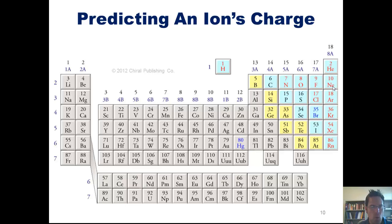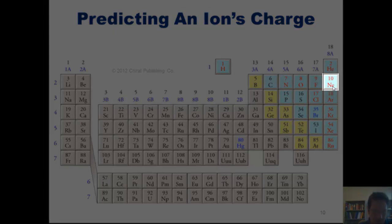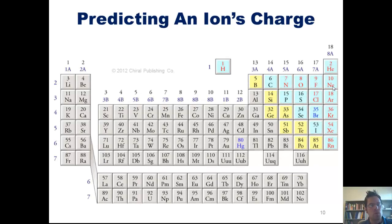If oxygen steals one electron from another element, it now feels like fluorine. Does it feel like neon yet? Nope. So what does it have to do? It has to steal a second electron. Now it feels like neon. Thus oxygen is happiest when it gains two electrons, either by sharing or stealing them from another atom. Thus oxygen wants to feel like it has a negative 2 charge.